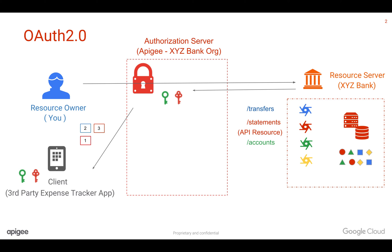The client uses this authorization code and asks for an access token to access the API resource. The Apigee Edge API management platform creates the access token, which acts like a key to access the API resource. The access token is stored in the client, and the client makes an API call with the access token. When the access token reaches the authorization server, Apigee verifies whether it belongs to the right client and whether it's the correct access token for the API resource it was issued for.